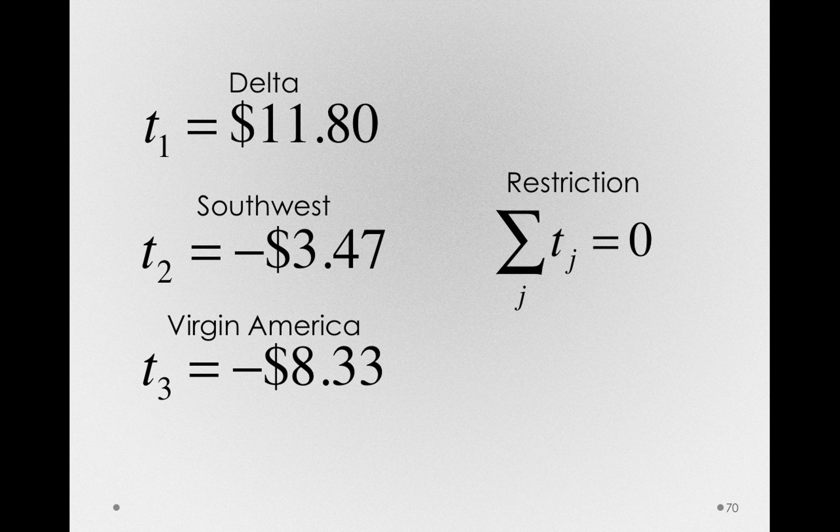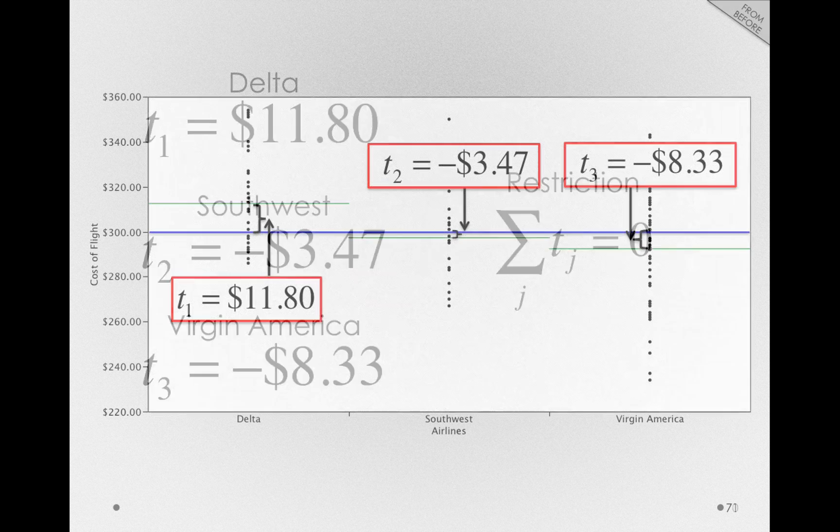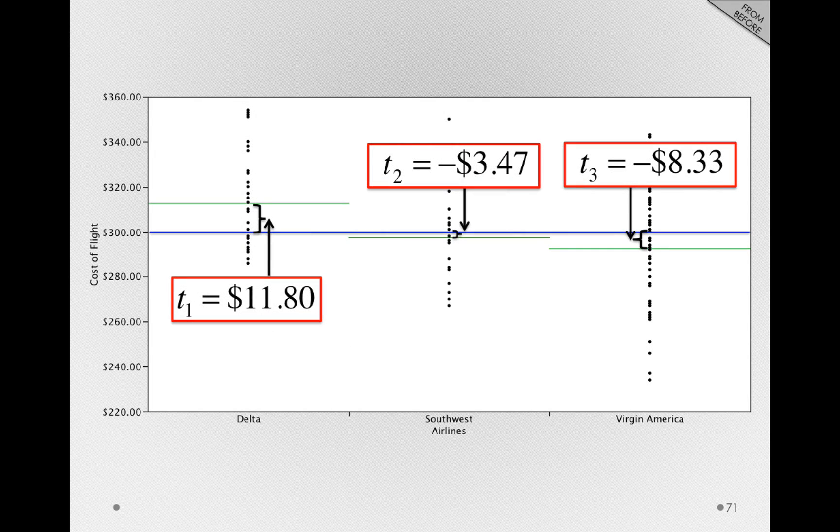That is, the sum of the t_j's has to be zero. And that's a simple consequence of the calculation we did to get these t's. That is, we found the deviation of those individual groups from the grand mean. So it had to be the case that the sum of these is zero.